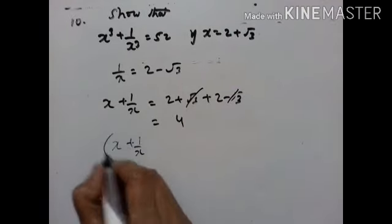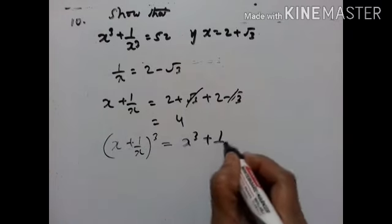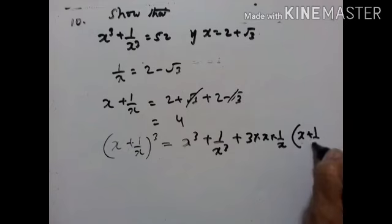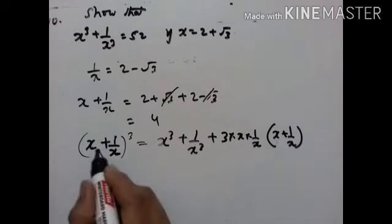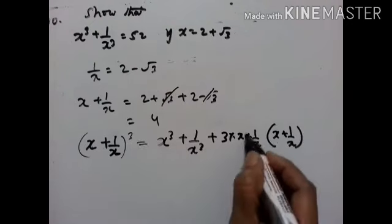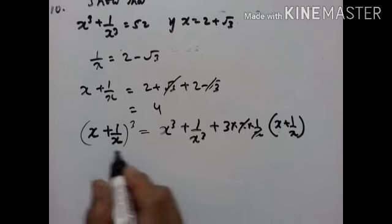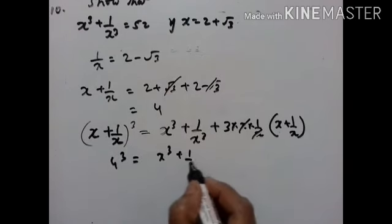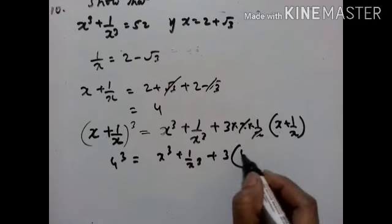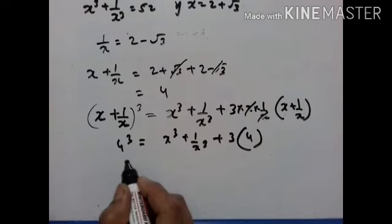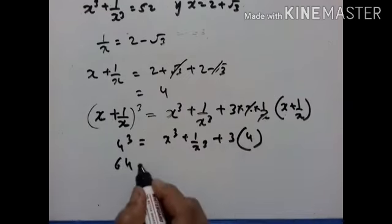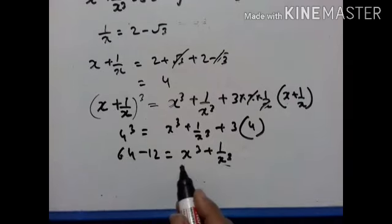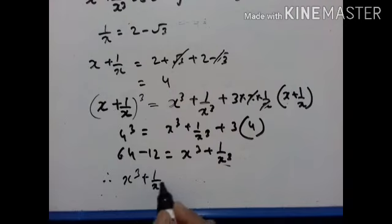Using the formula (a+b)³ = a³ + b³ + 3ab(a+b): (x plus 1/x)³ = x³ + 1/x³ + 3·x·(1/x)·(x plus 1/x). Since x·(1/x) = 1 and x plus 1/x = 4, we get 4³ = x³ + 1/x³ + 3×4. So 64 = x³ + 1/x³ + 12, giving x³ + 1/x³ = 64 minus 12 = 52.